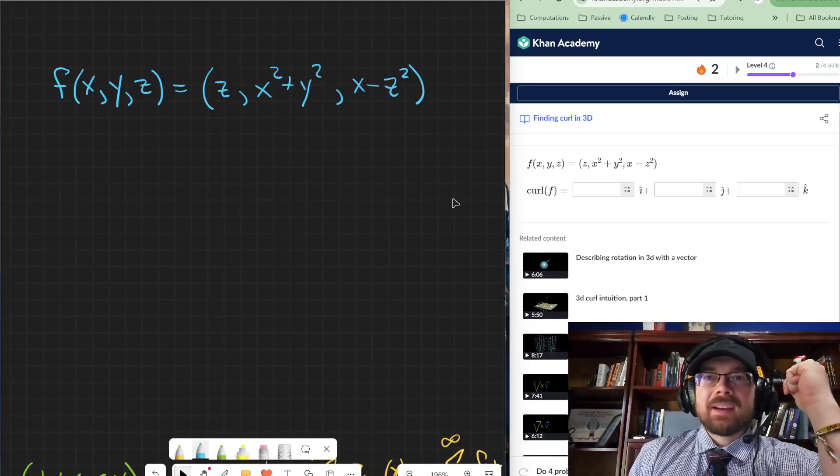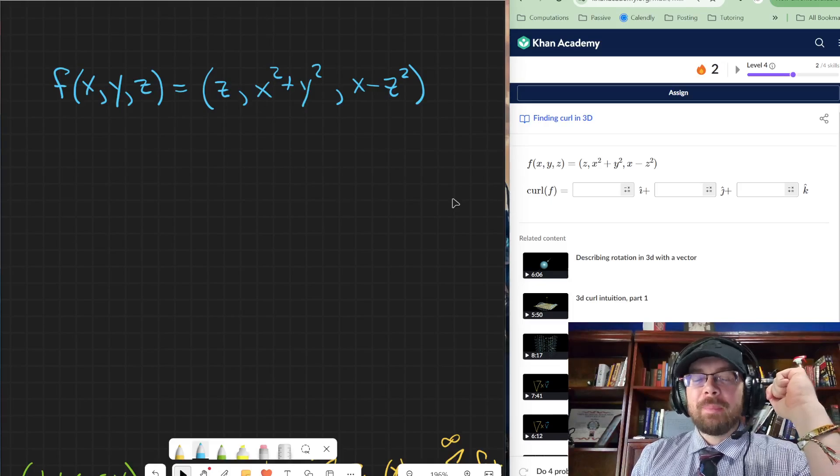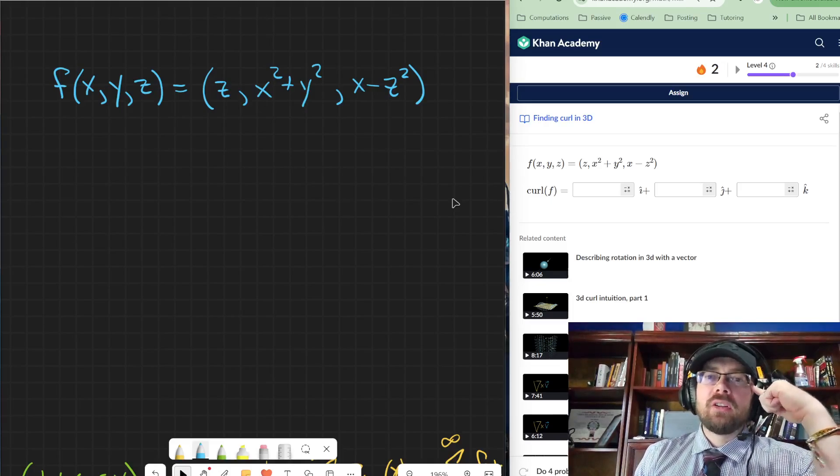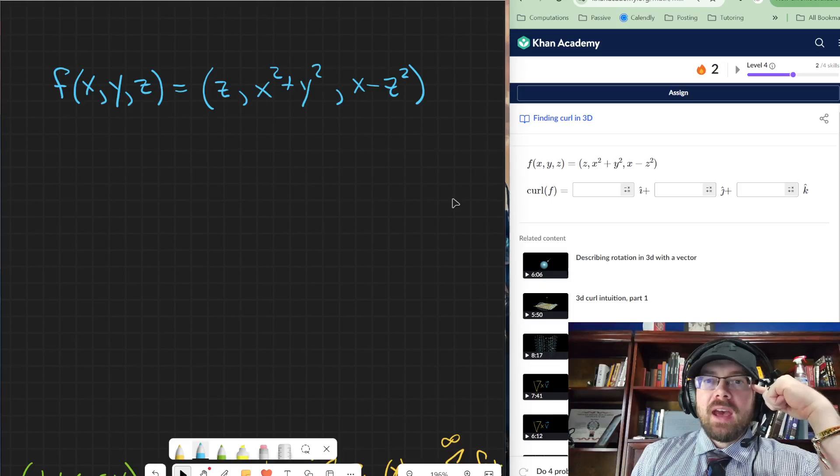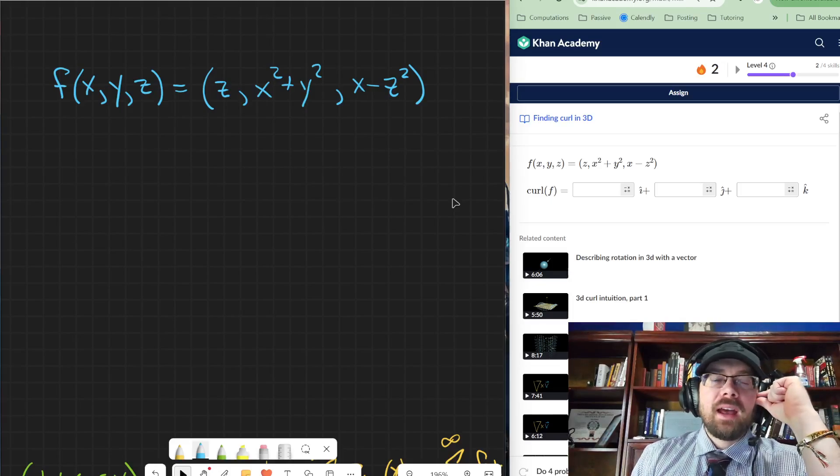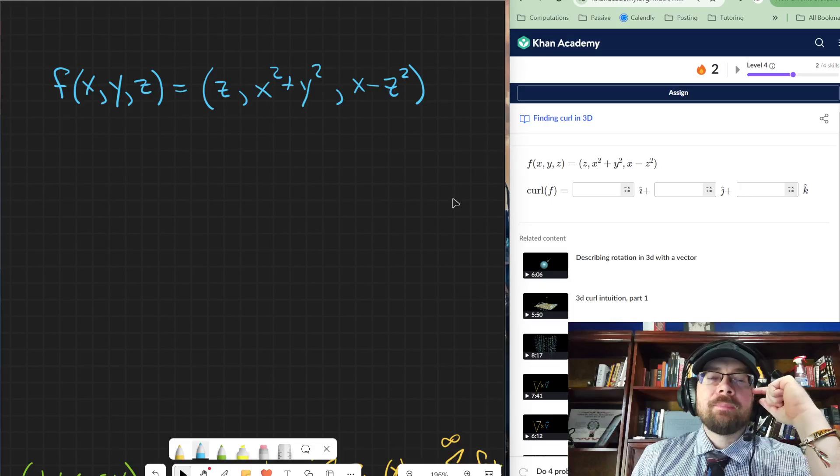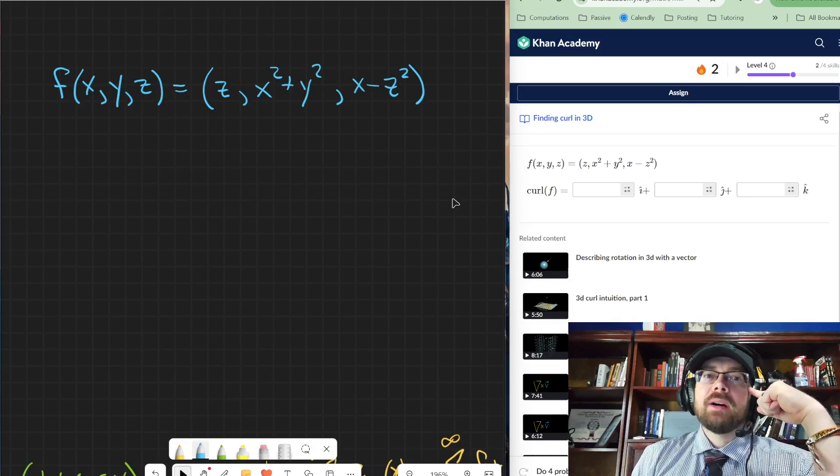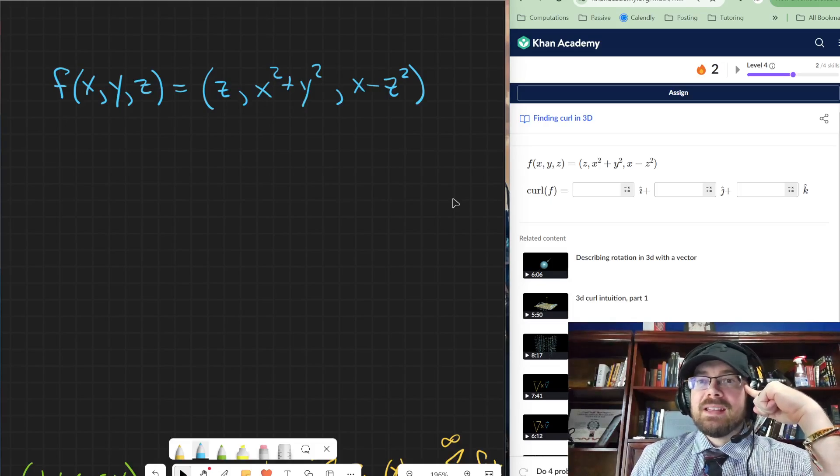All right. Hey guys, Mr. Kyle Myers of Mathematics and let's just jump into it. We're trying to find the curl of the function f, which is defined as a function of x, y, and z equal to z comma x squared plus y squared comma x minus z squared.